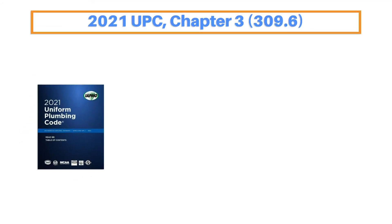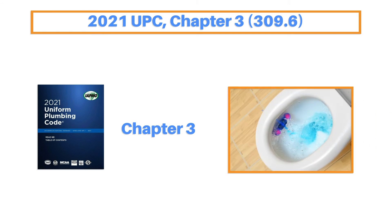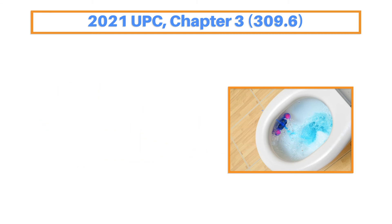The new requirement for these situations is found in Chapter 3 of the 2021 UPC. While it's impossible to prevent dead legs in a plumbing system, the new requirement mandates that dead legs have a method of flushing, in order to protect the public from any dangers from the stagnant water.